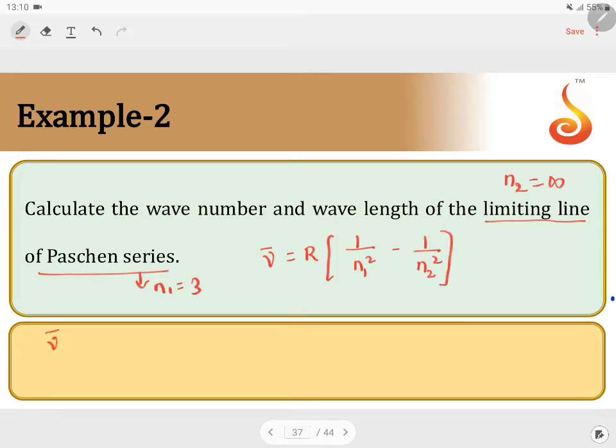Therefore, ν̄ is equal to 1.09 into 10 power 7 into 1 by 9 minus 1 by infinity. 1 by infinity is 0. Therefore, if you simplify, you get 1.218 into 10 power 6 per meter.